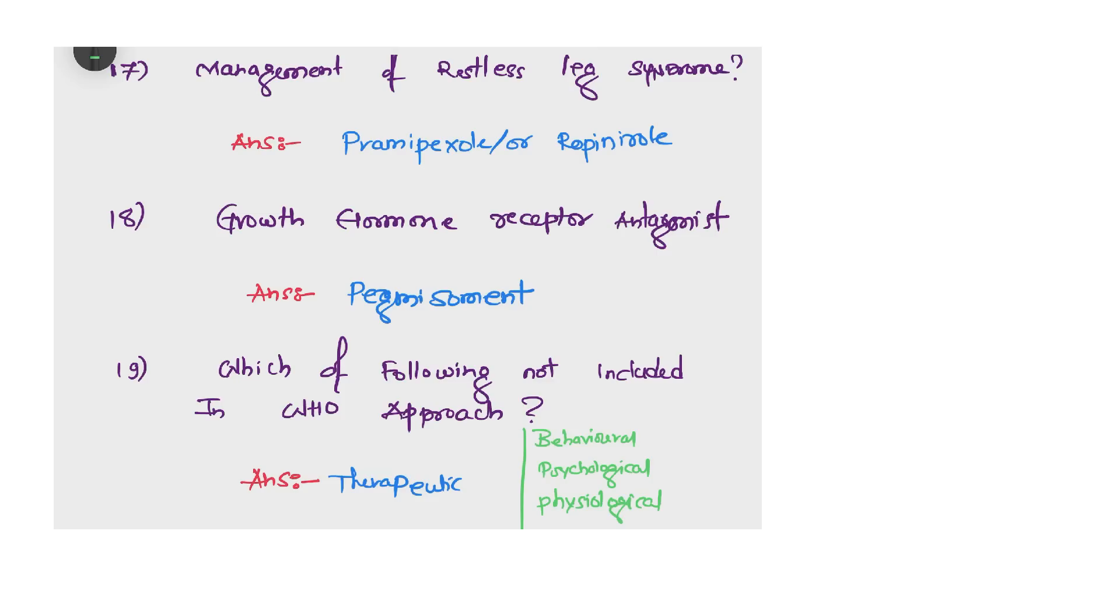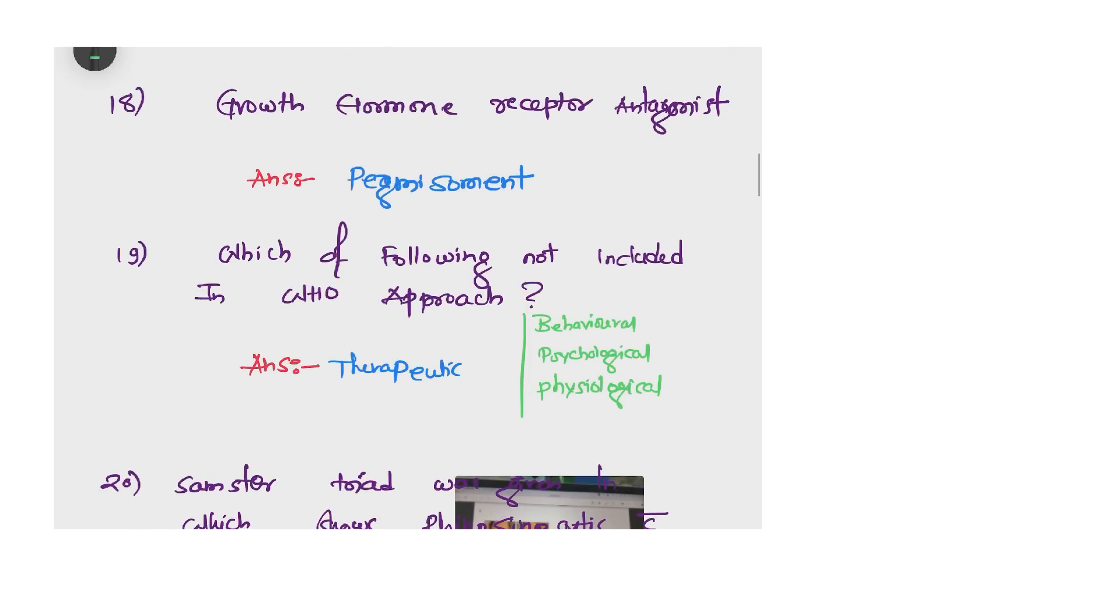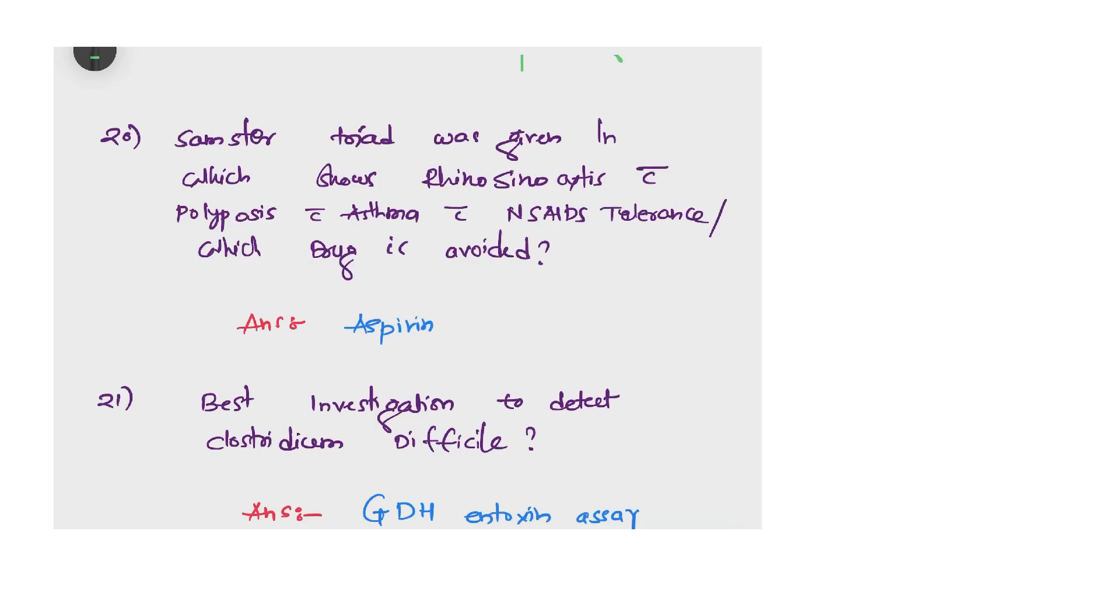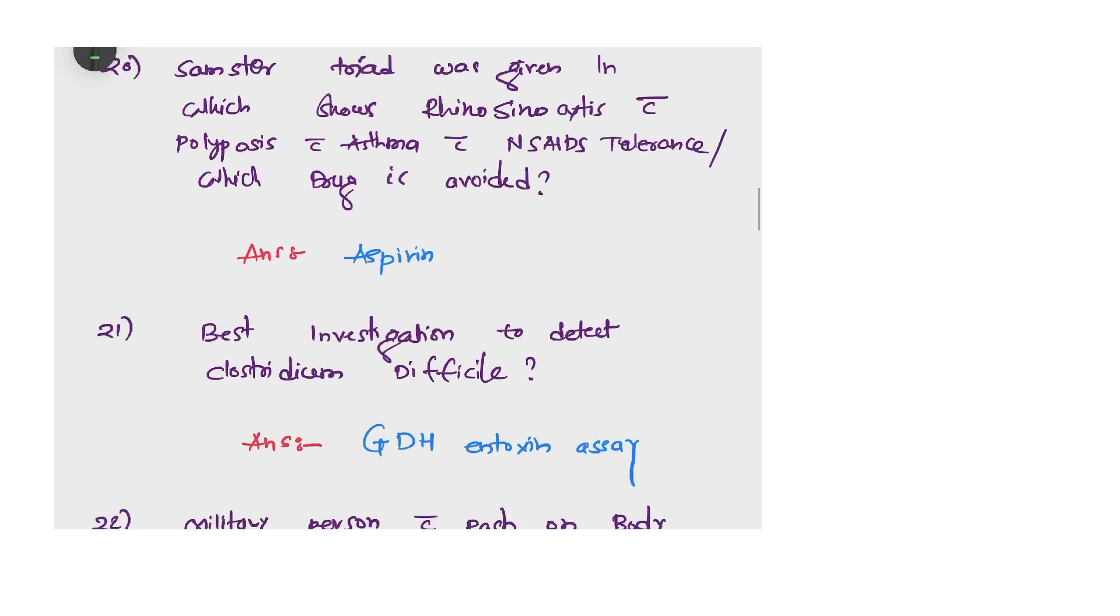Next question: what is the management of restless leg syndrome? The answer is pramipexole or ropinirole. Growth hormone receptor agonist? Answer is pegvisomant. Which of the following is not included in WHO approach? We have options like behavioral, psychological, physiological, but the answer is therapeutic approach.